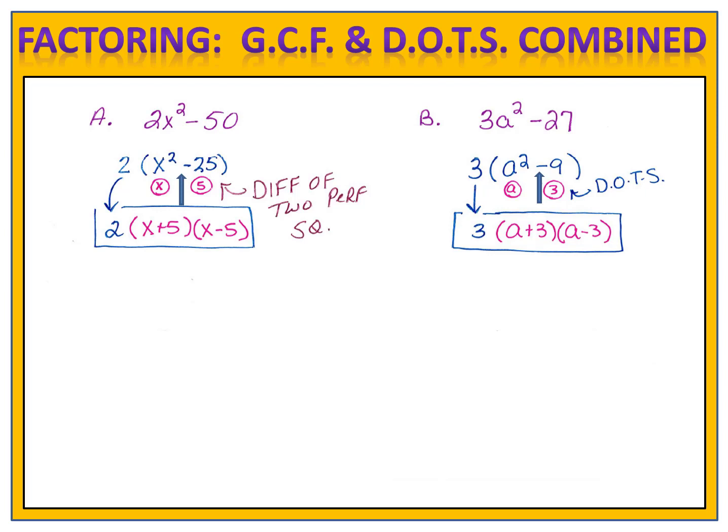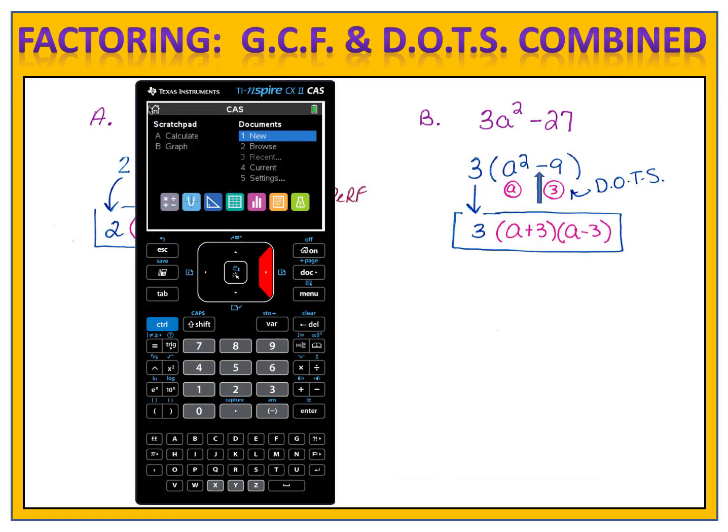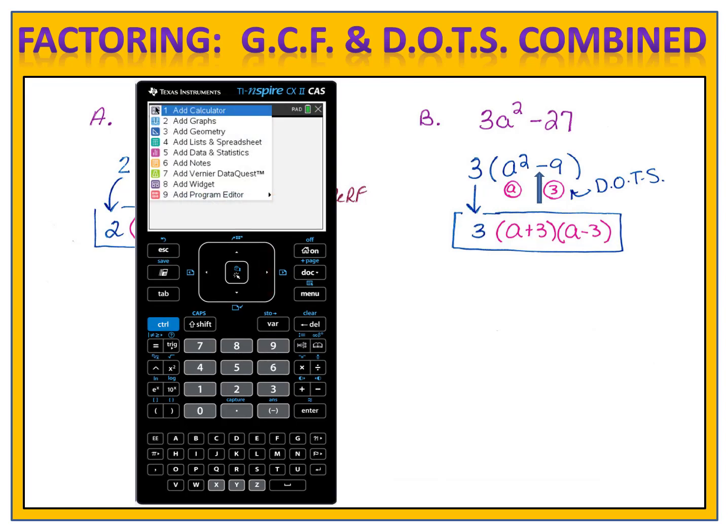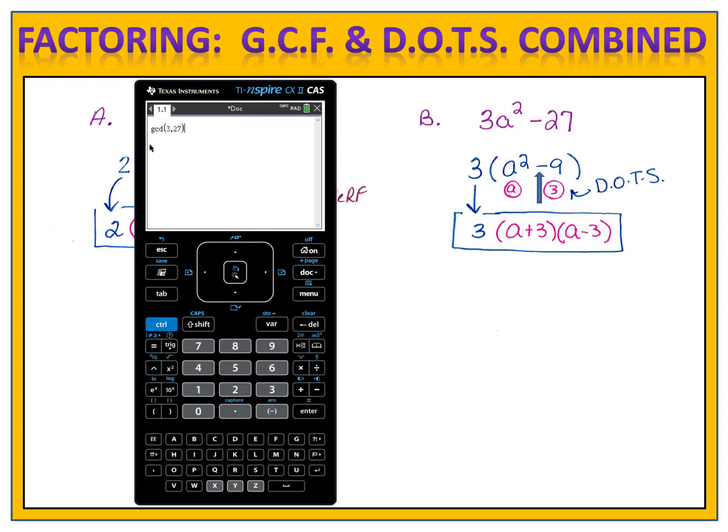If you find that you struggle finding greatest common factors of two numbers, you can always use your graphing calculator. Let me show you how. If you were to take your TI-Inspire CX, and start a new document, and add a calculator, you can type into the calculator GCD using the alphabet keys at the bottom, and then in parenthesis put the two numbers with a comma in the middle.